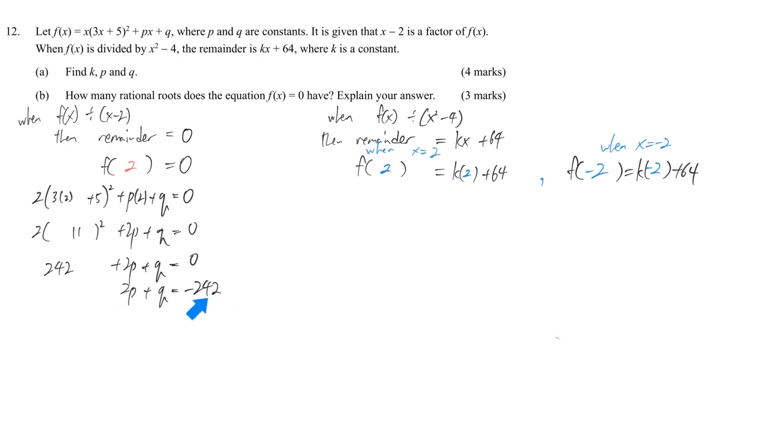The second thing is f(2) equals 2k plus 64. But don't forget, f(2) is just simply equal to 0. So we can replace this one by 0. It's 2k plus 64. The first unknown we can find is k, and k equals negative 32.